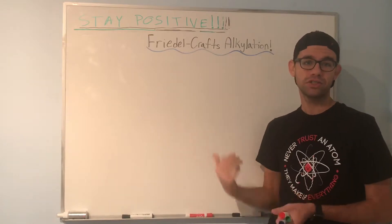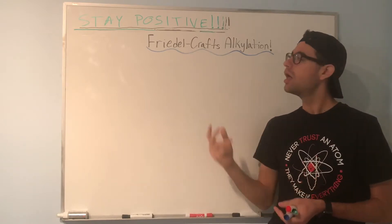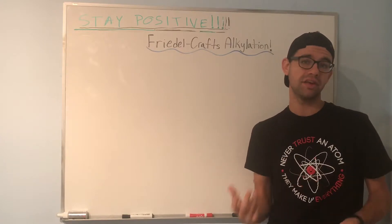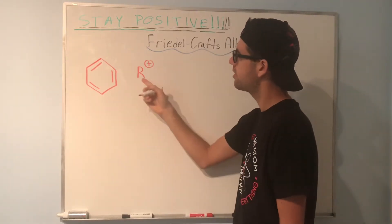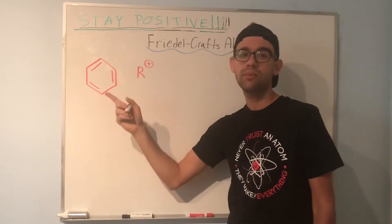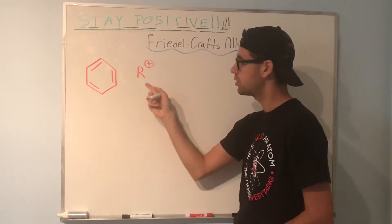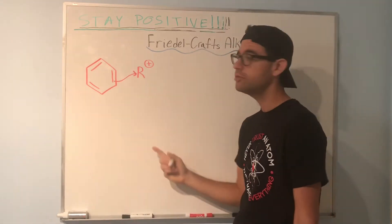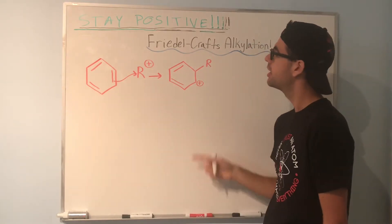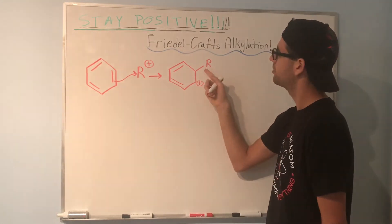Now that we've seen how to make our strong electrophile — the carbocation — and after we consider rearrangement based on the specific problem, let's go into how we can get that electrophile onto an aromatic ring like benzene. Here I've drawn a benzene ring and our strong electrophile from the previous step. The first thing that'll happen is the pi electrons in one of the pi bonds of the benzene will nucleophilically attack our carbocation — our strong electrophile. Now we've formed a carbocation because we've disturbed the aromaticity of the benzene ring, and we have our R group, our alkyl group, on the ring.